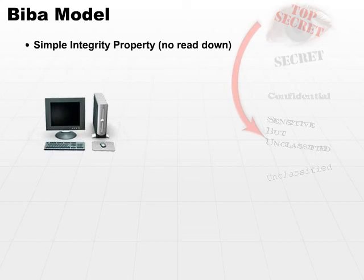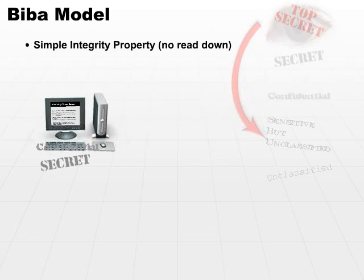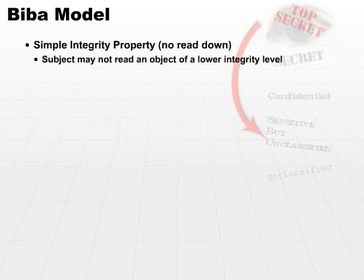Let's go back to our Microsoft Word document example. Let's say that we are editing a document that is security level of secret. We don't want to insert a passage that has not been cleared as secret, because we could read in a passage that would decrease the overall integrity or security value of our document if we put in lesser value data. So the subject may not read an object of lower integrity level. Another way to look at this is simple data validation — you always want to make sure you validate data, that it is good and accurate, before you store it. You might think of this as dirty input versus clean input. You can't read in bad data; it has to be validated.